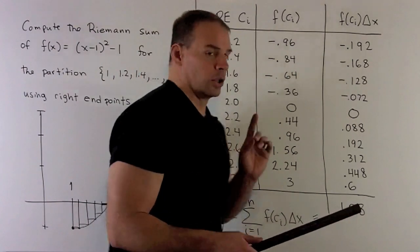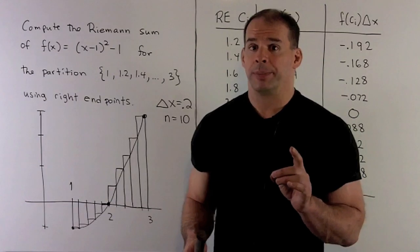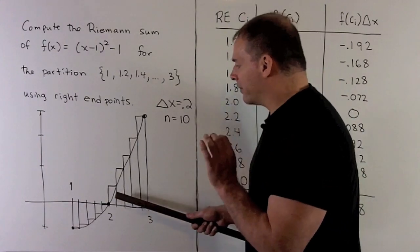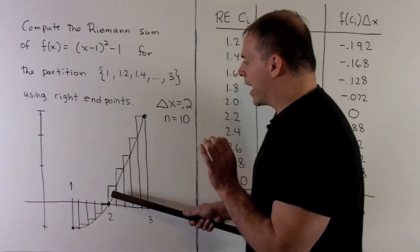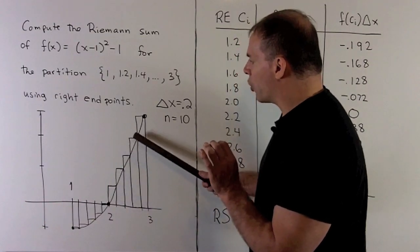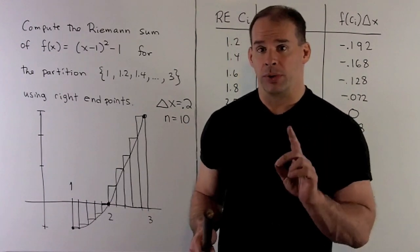So you'll notice, if you look at your picture, 1.08 is going to be an overestimate. When we have our region between 2 and 3, the rectangle is going to be above our graph, so we know we're using too much area when we're between 2 and 3.